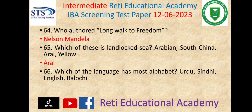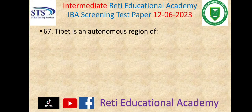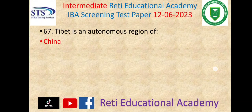Question number 66: Which language has the most alphabets? Options were Urdu, Sindhi, English, and Arabic. The right answer is Sindhi. Question number 67: Tibet is an autonomous region of China.